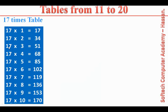17 times table. 17 ones are 17. 17 twos are 34. 17 threes are 51. 17 fours are 68. 17 fives are 85. 17 sixes are 102. 17 sevens are 119. 17 eights are 136. 17 nines are 153. 17 tens are 170.